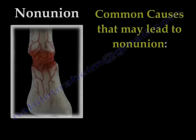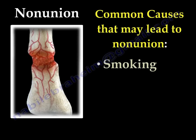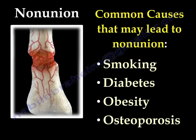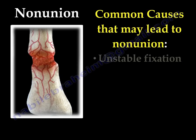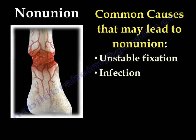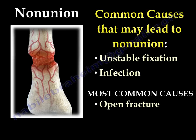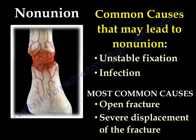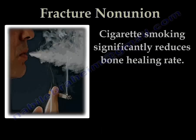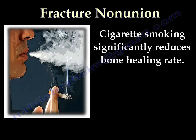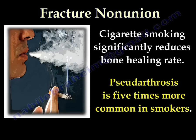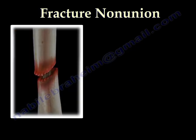Common causes that may lead to non-union: smoking, diabetes, obesity, osteoporosis, unstable fixation, and infection. The most common causes are usually open fracture and fracture with severe displacement. Cigarette smoking significantly reduces bone healing — pseudoarthrosis is five times more common in smokers. Cigarette smoking may also affect the function of stem cells.